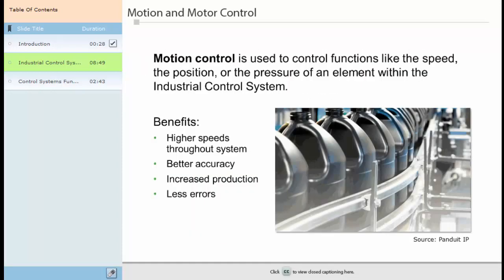In automation, motion control is used to control functions like the speed, position or pressure of an element within the industrial control system. Most basic motion control systems are comprised of devices like motors and drives to move elements along. Advanced motion control systems use data provided by sensors and internal programming to make instant decisions. The more precise a motion control system, the more that automated system will see benefits such as higher speeds throughout the system, better accuracy, increased production, and fewer errors.